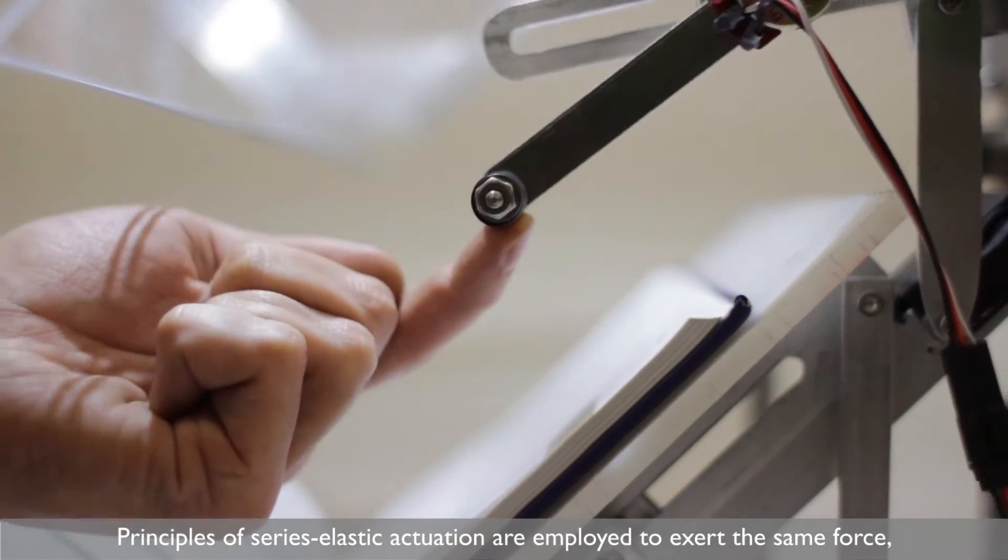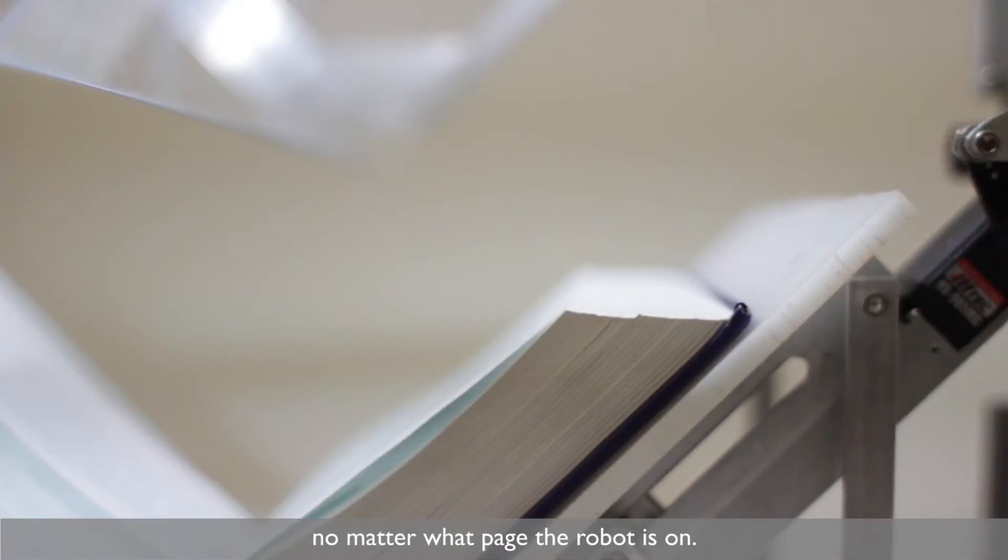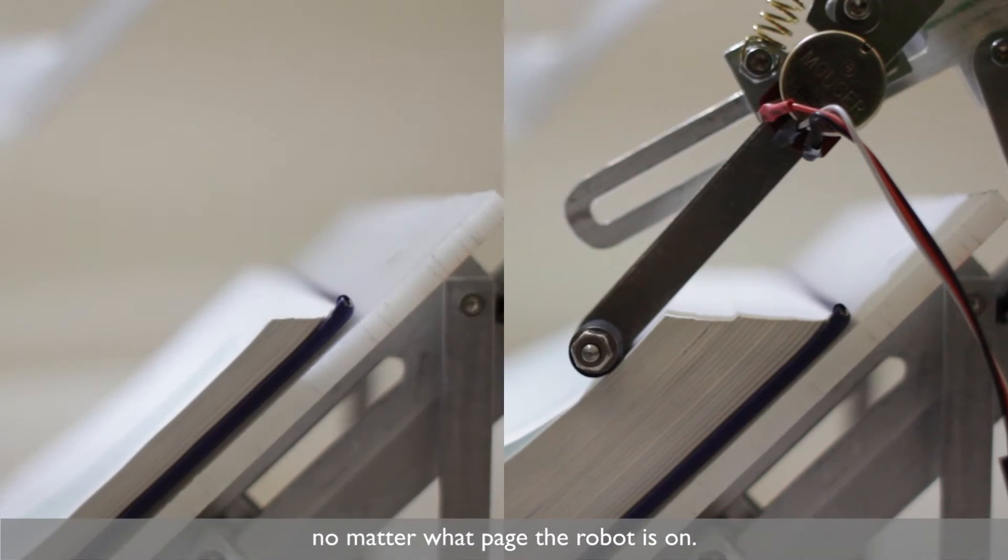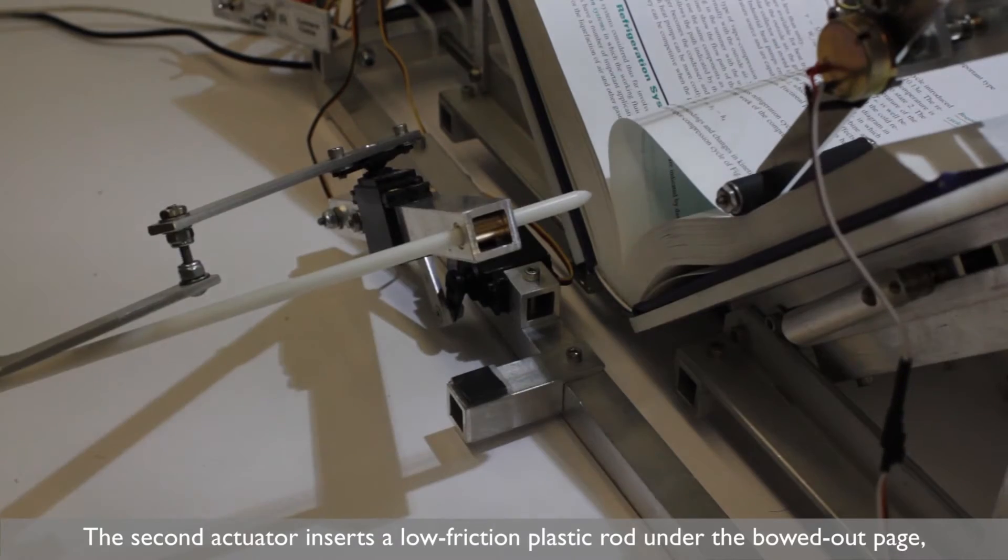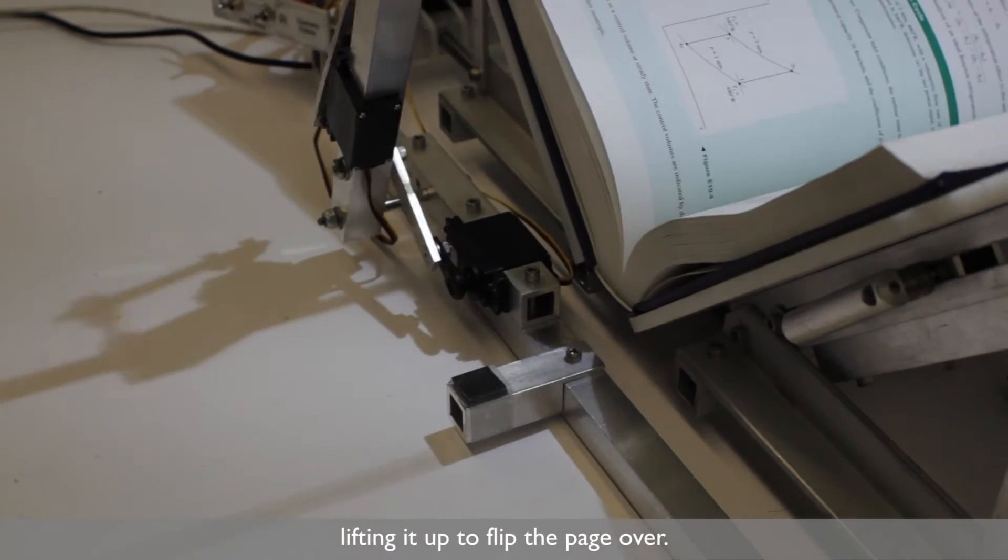Principles of series elastic actuation are employed to exert the same force, no matter what page the robot is on. The second actuator inserts a low-friction plastic rod under the bowed page, lifting it up to flip the page over.